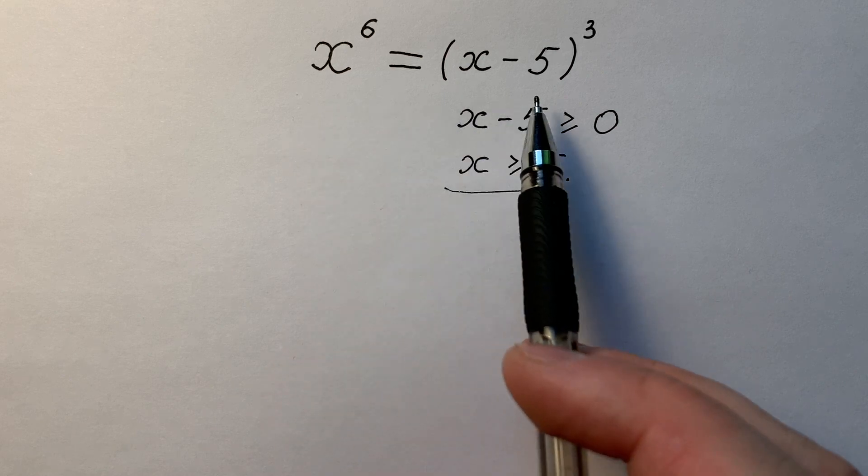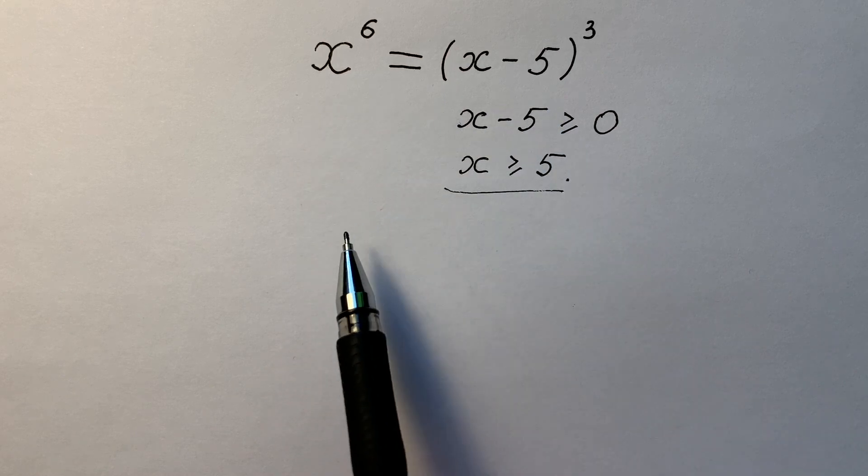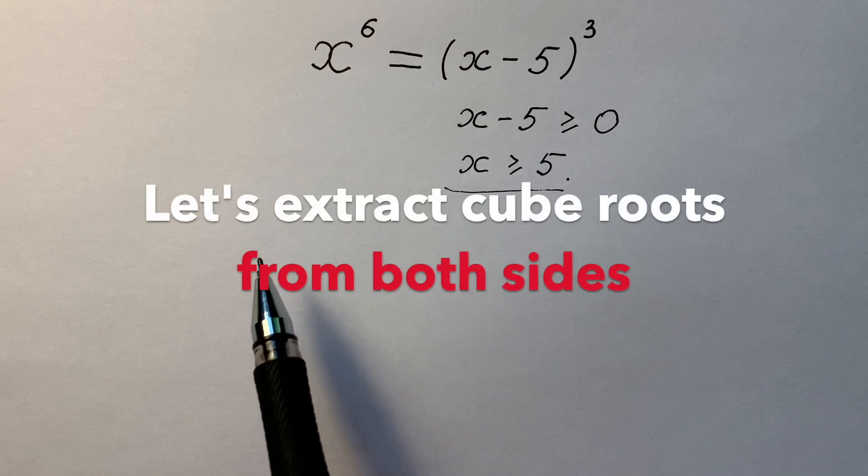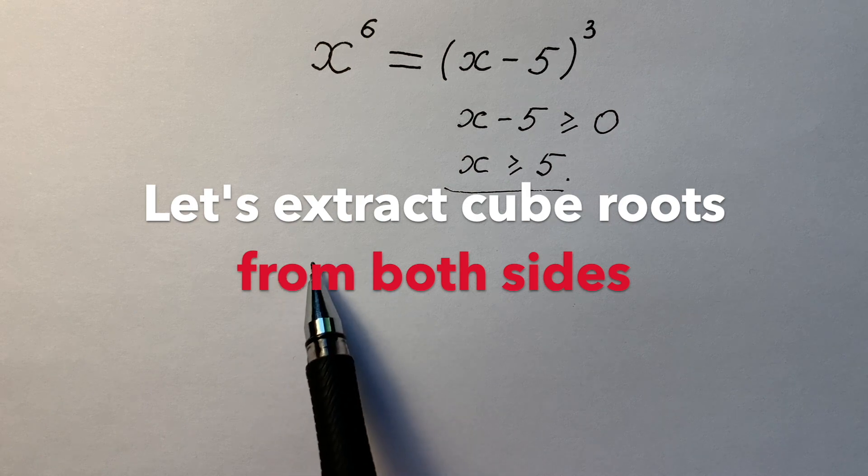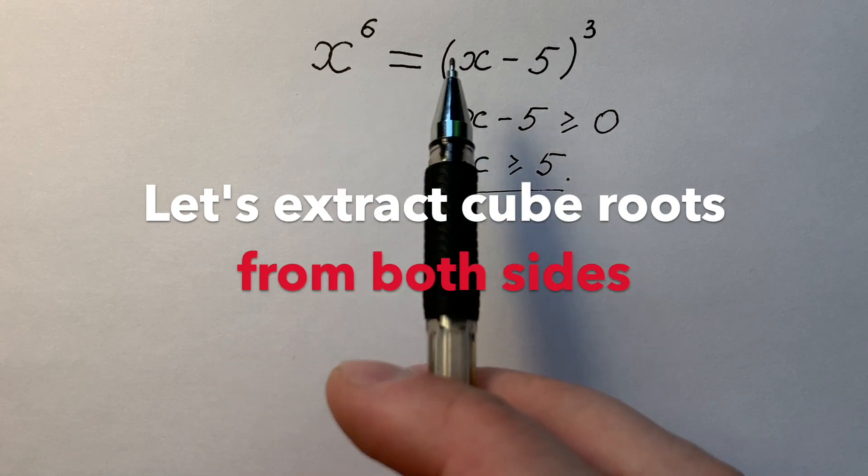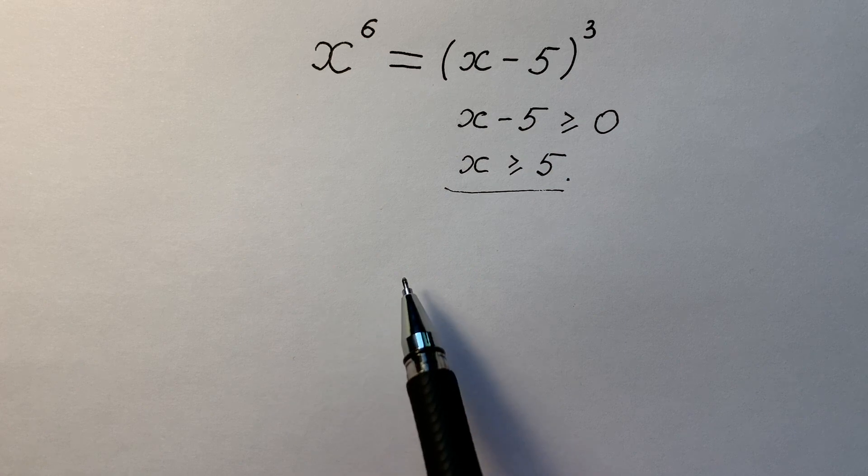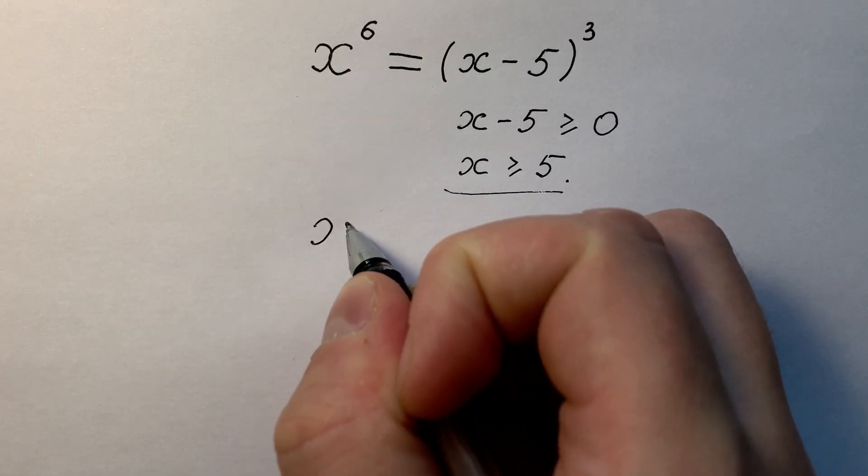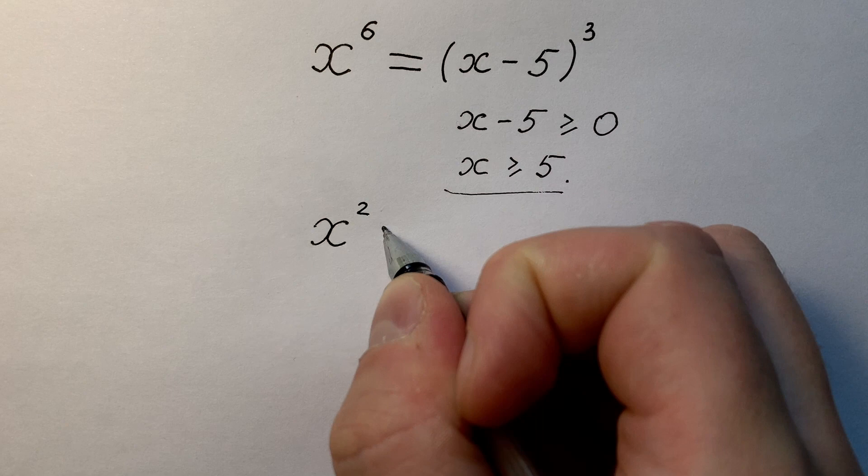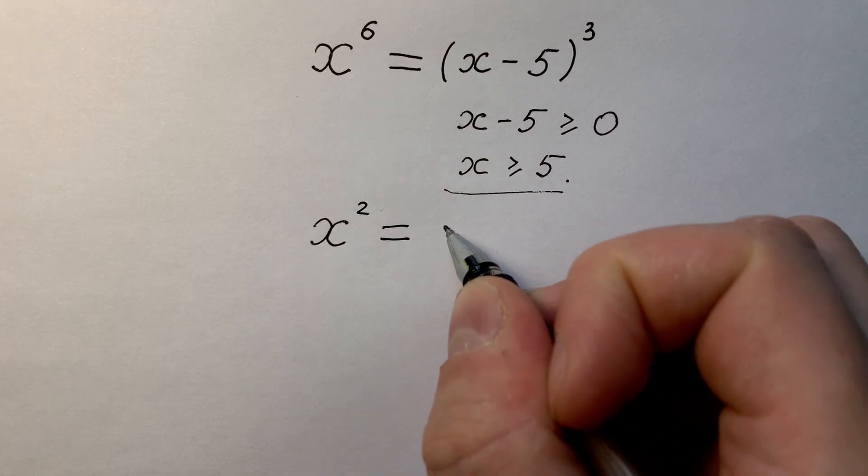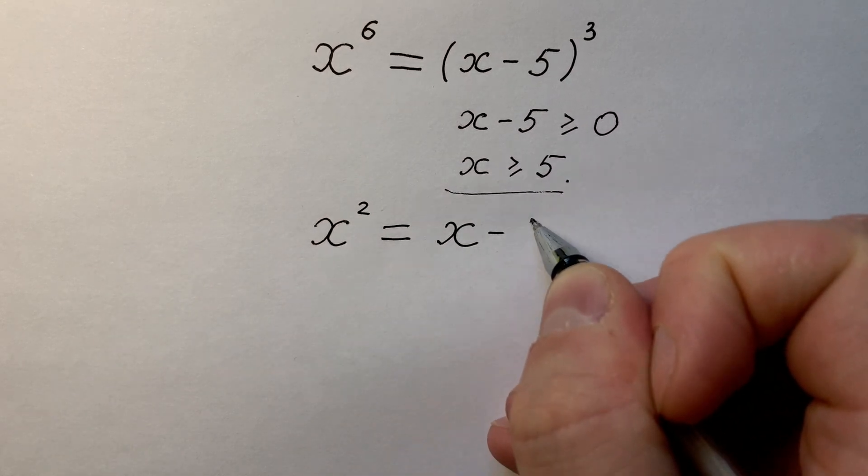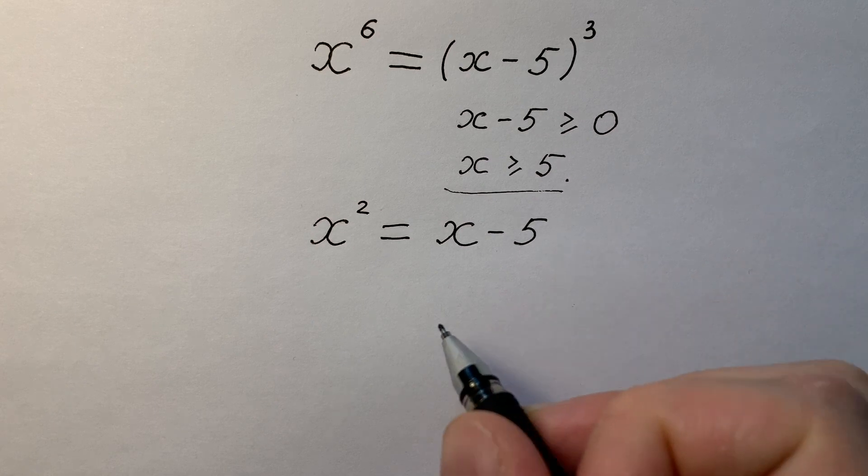And while left and right sides are more or equals to 0, let's extract the cube root from two sides of these equations. It's simple. And there we have x to the power of 2 equals to x minus 5. Very simple.